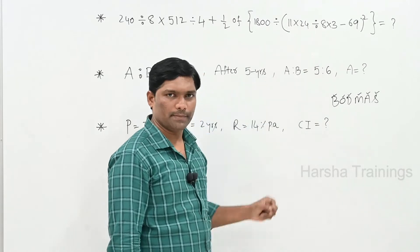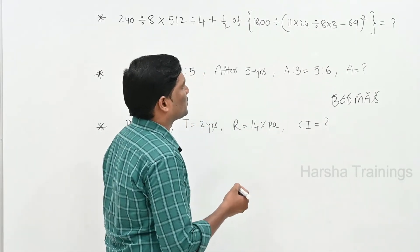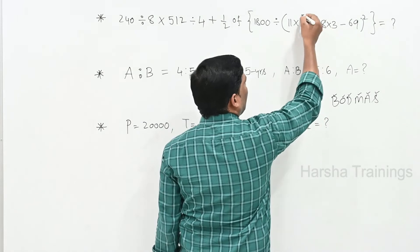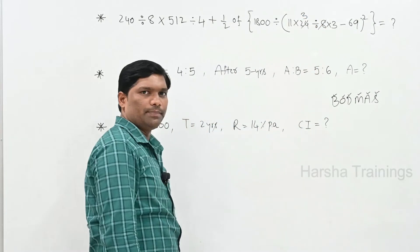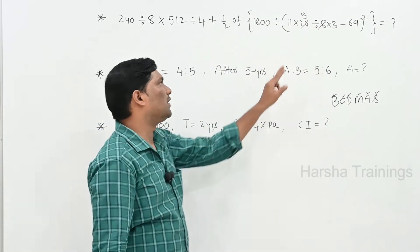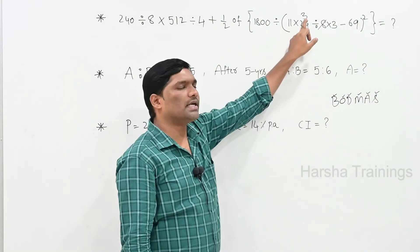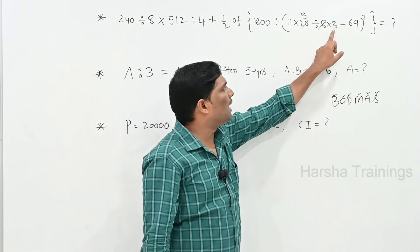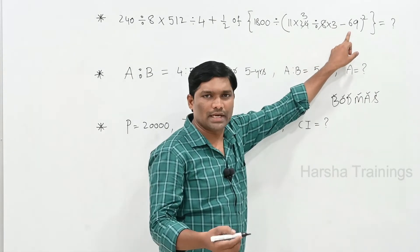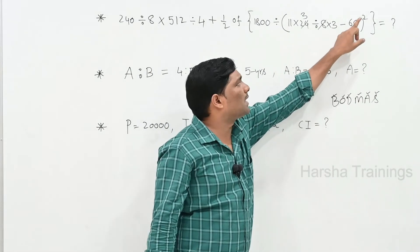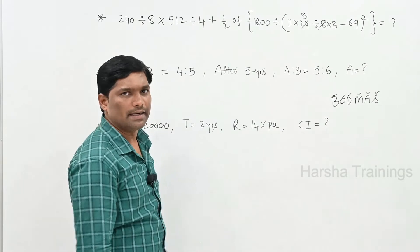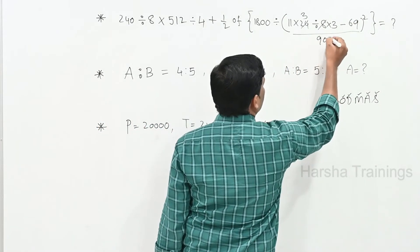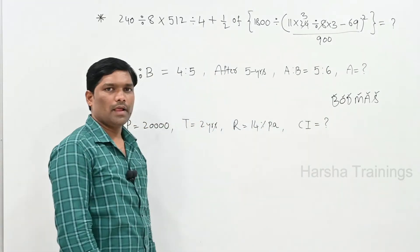Inside the inner bracket, first preference is given to Division. 8 ones are 8, 3s are 24. 11 threes are 33, 33 into 3 is 99. So 99 minus 69 equals 30, and 30 squared equals 900. Total answer from this bracket: 900.